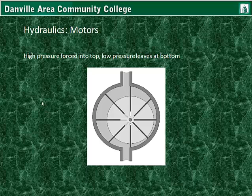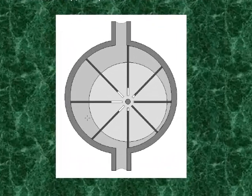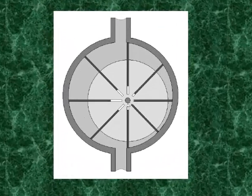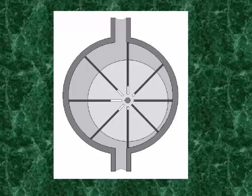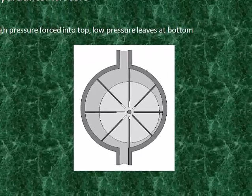Hydraulic motors are similar in construction to a vane pump. High pressure comes in through the bottom, which rotates the vanes clockwise, turning a shaft that comes out of the casing at the center point. The fluid then exits through the top in this diagram.